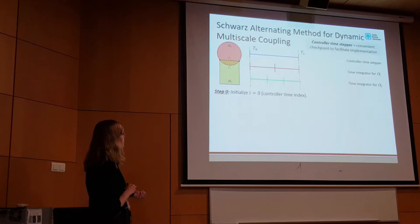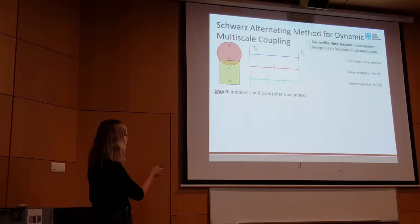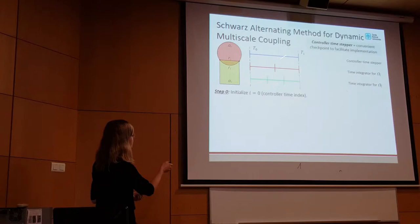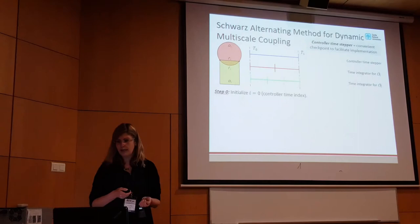Here is the formulation we came up with for dynamics. In the context of this domain decomposition picture, we have a time-stepper in omega-1 with some time-step, and a time-stepper in omega-2 with some time-step — they don't need to be the same. The last ingredient is what we call a controller time-stepper, shown in blue, which is basically a set of convenient checkpoints to facilitate the implementation of the method.